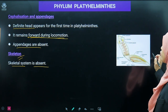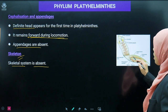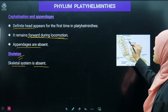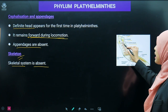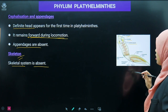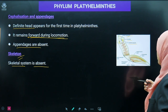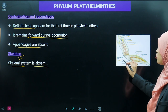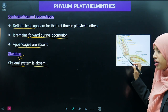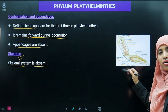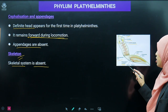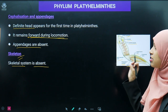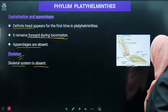Looking at planaria: there is an eye spot region, auricles, cerebral ganglia originating from the brain area, and lateral nerve cords — meaning the nervous system is properly developed. A gastrovascular cavity is also present, and there is a pharyngeal chamber for respiration. All these organ systems are properly developed in platyhelminthes.